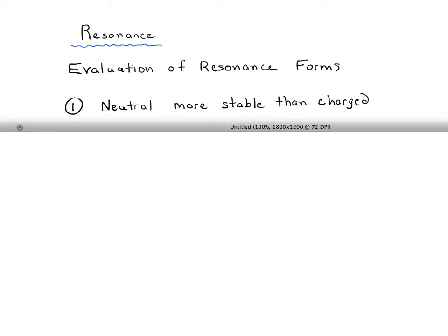The number one factor we talked about, which makes some resonance forms more stable than others, is neutral resonance forms are more stable than charged resonance forms.